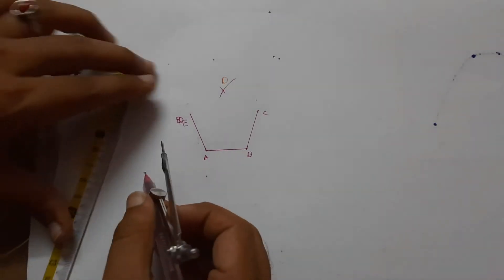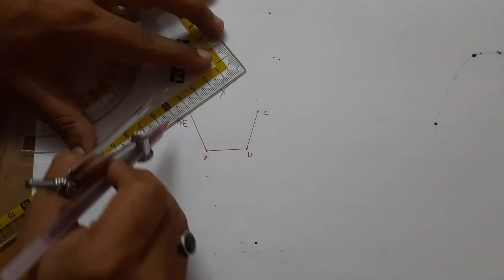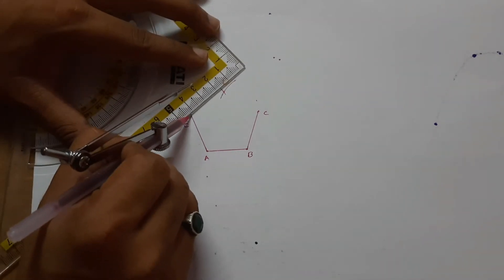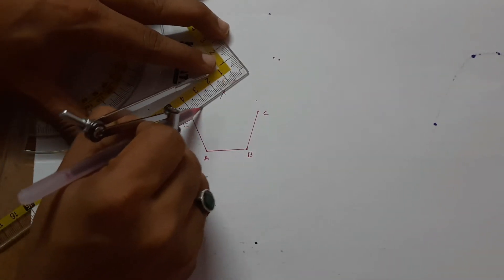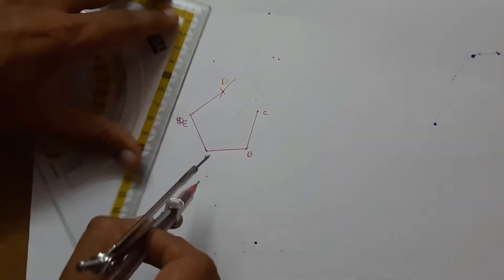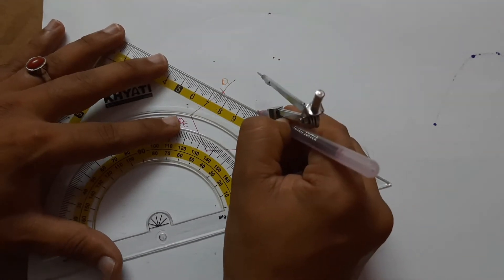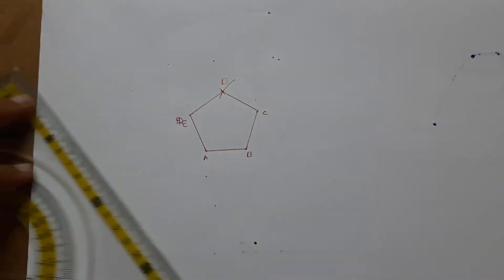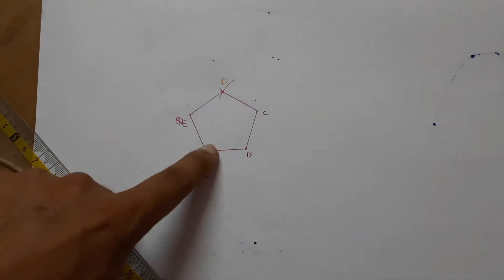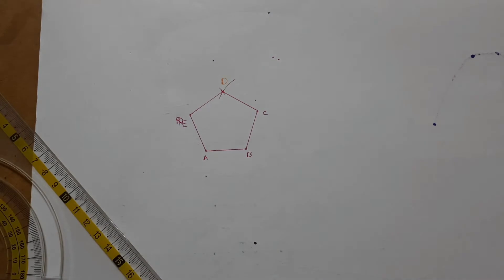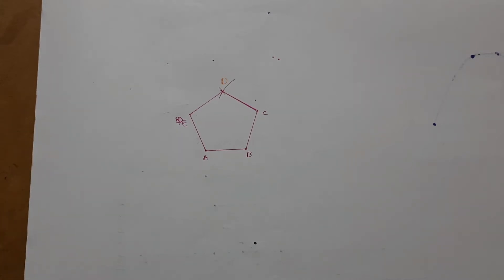Now join B to E, join C to D. So now you have got a pentagon of side 25 mm — a polygon having 5 number of sides.